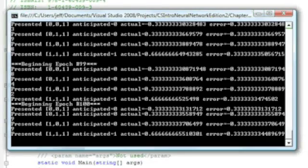You can see that for the first 3 patterns, just look at epoch 100 at the bottom. The first 3 patterns we anticipate is 0, yet the output is negative 0.33 and 0.33. For the 4th one, the anticipated output is 1, but the actual output is 0.66.